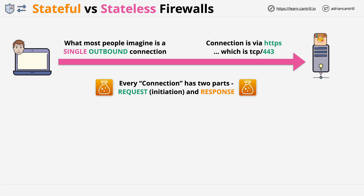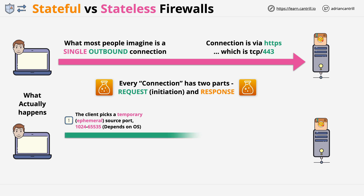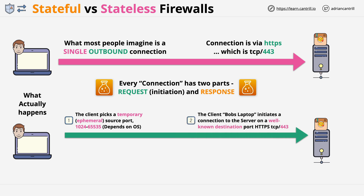What actually happens as part of this connection setup is this. First, the client picks a temporary port known as an ephemeral port. Typically, this port has a value between 1024 and 65535, but this range is dependent on the operating system. Then, once this ephemeral port is chosen, the client initiates a connection to the server using a well-known port number — a port number typically associated with one specific popular application or protocol. In this case, TCP port 443 is HTTPS.